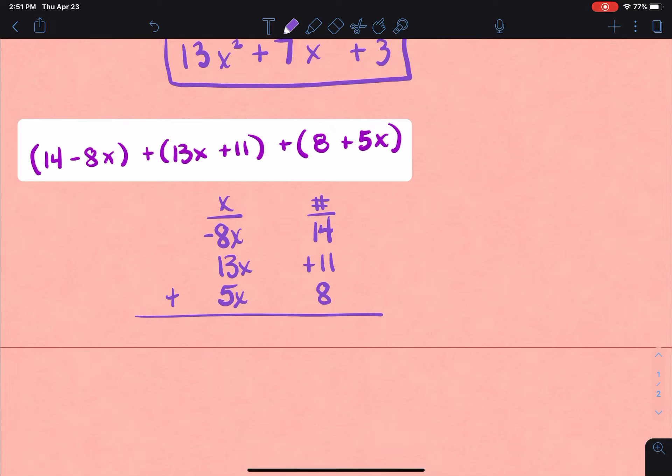And now I'm just going to total. So in that first column, they're all x's, so I know x is going to go there. So negative 8 and 13 would be 5, plus another 5 is going to be 10. Then if I go to this column, 14 plus 11 plus 8, I'm going to total those all together. So let's see, 3 carries, so 33, and it's positive, so I'm going to write plus.